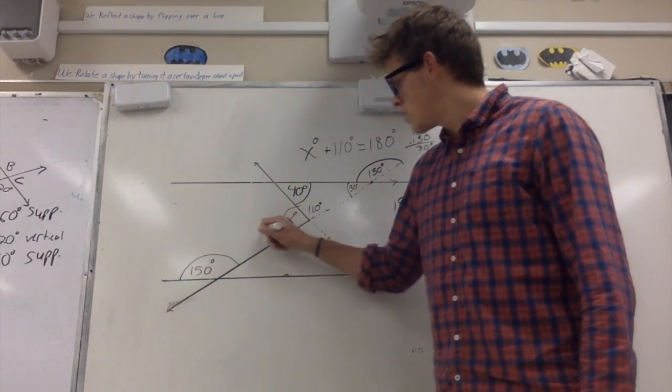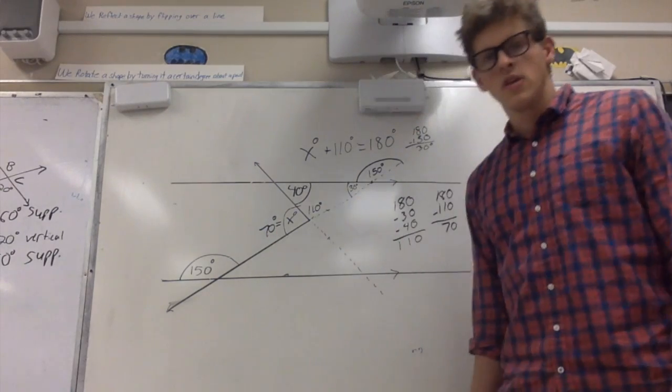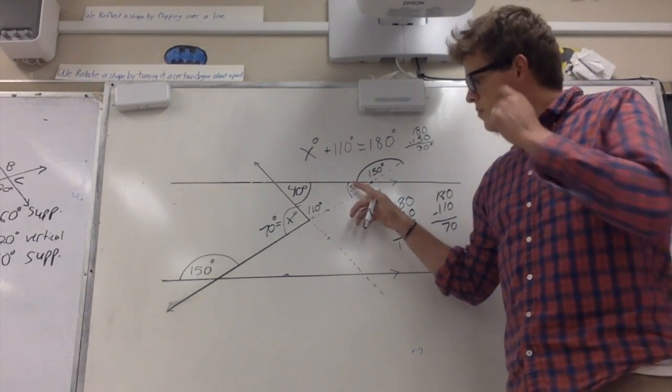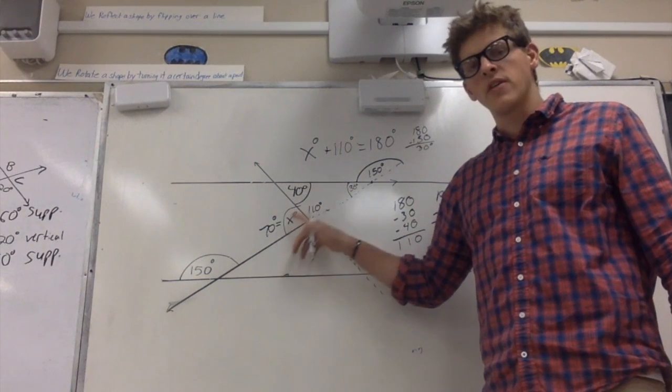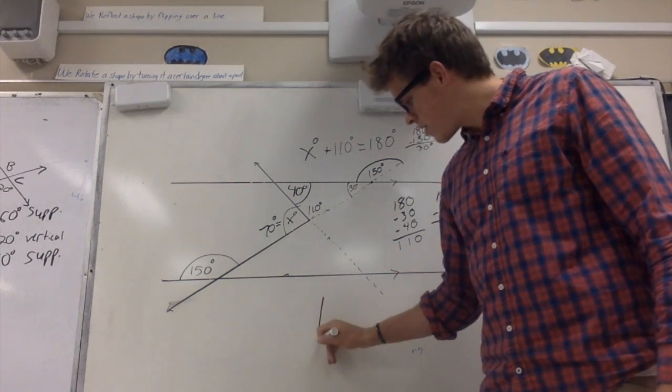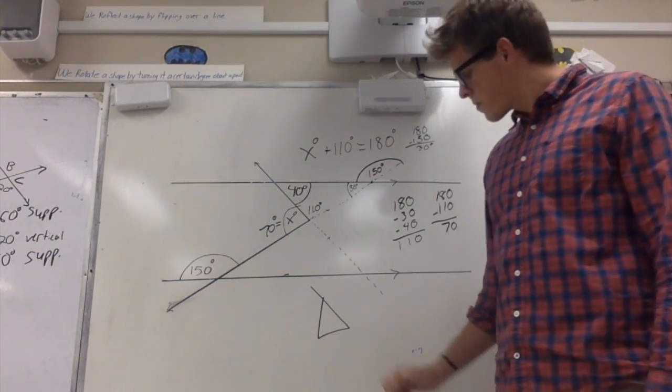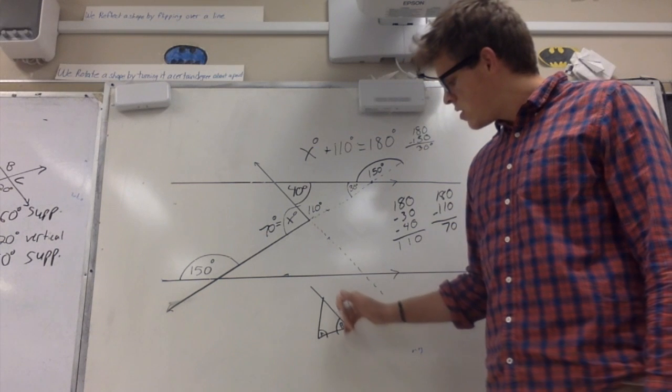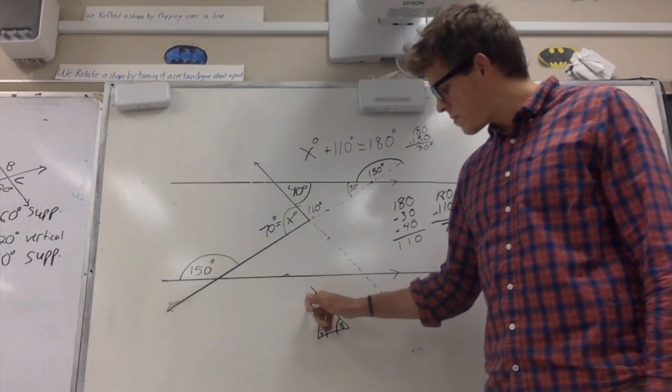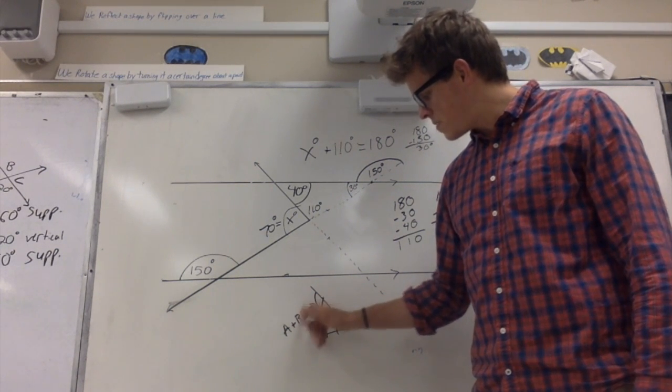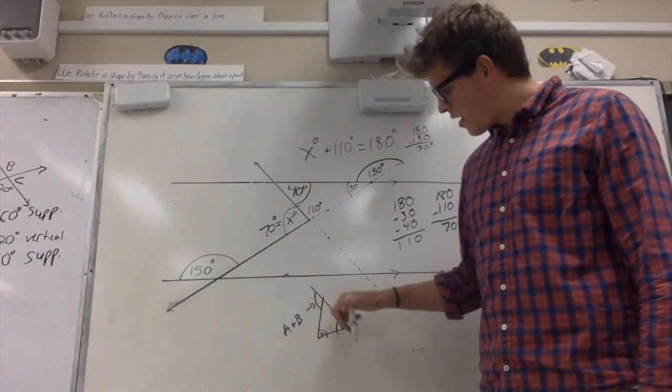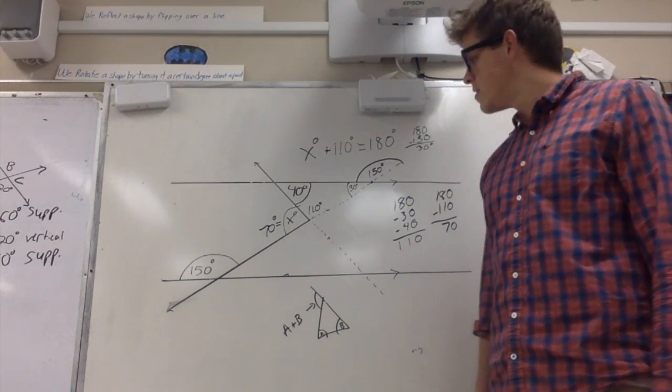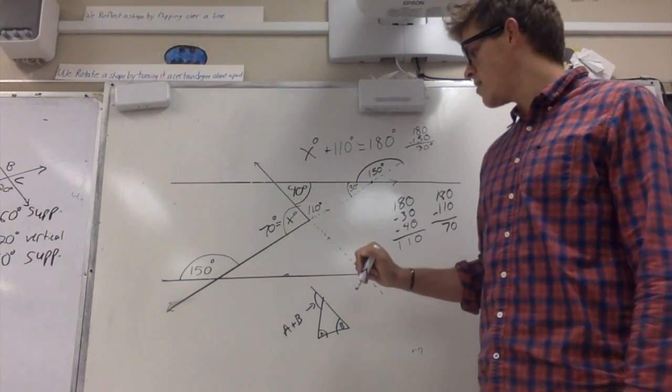One thing I want you to notice is the fact that these two angles right here are inside the triangle. We could call this an external angle. So if you were to take any triangle and go like that, we'll call this a, we'll call this b. A plus b is always going to equal this right here. So these are on the other side of the triangle. These two are going to sum up to be the same as that angle right there. So we can see it right here. So 40 plus 30 equals 70.